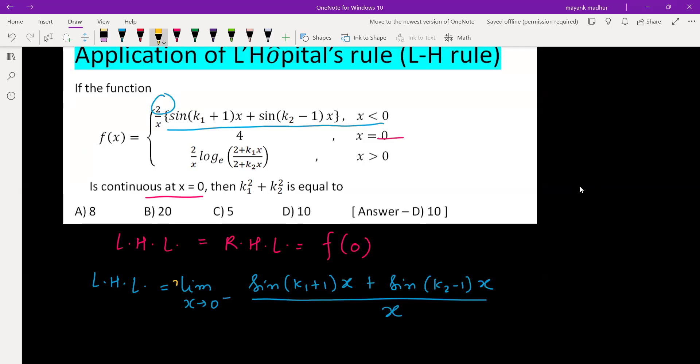2 we can take outside the limit, it is constant in multiplication. Now for solving this limit, either you can use the standard result that sin(θ)/θ is tending to 1 when θ is tending to 0. I am using L'Hôpital's rule in which we differentiate numerator and denominator separately.